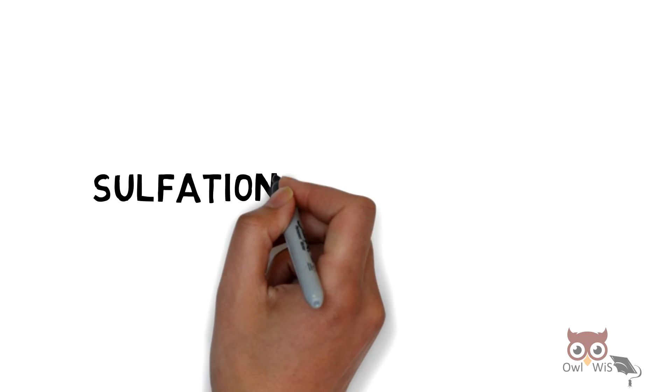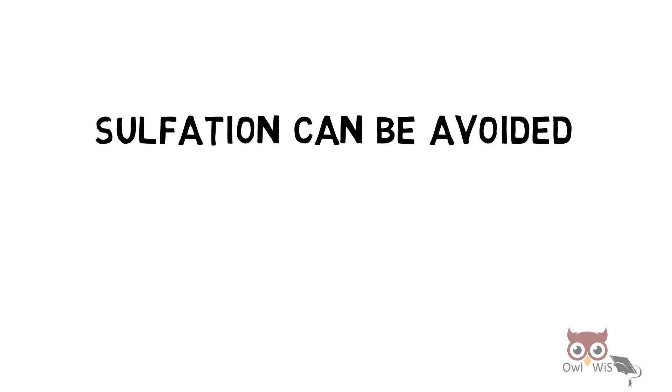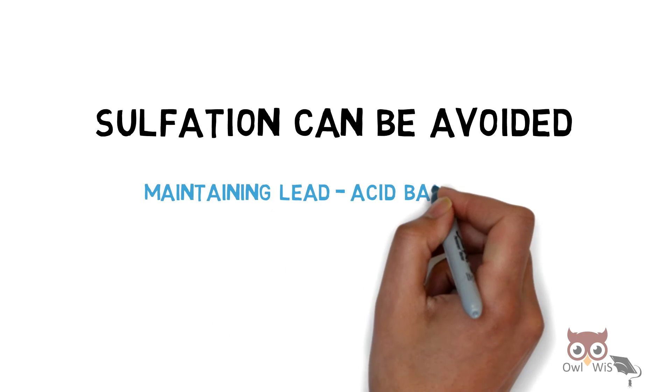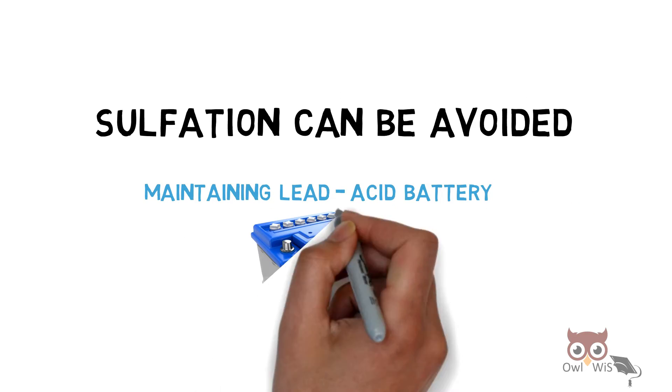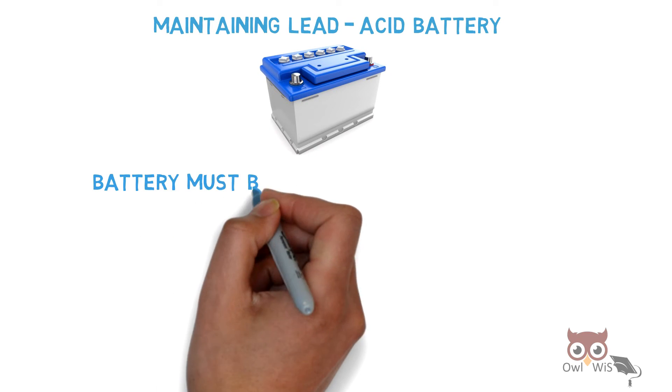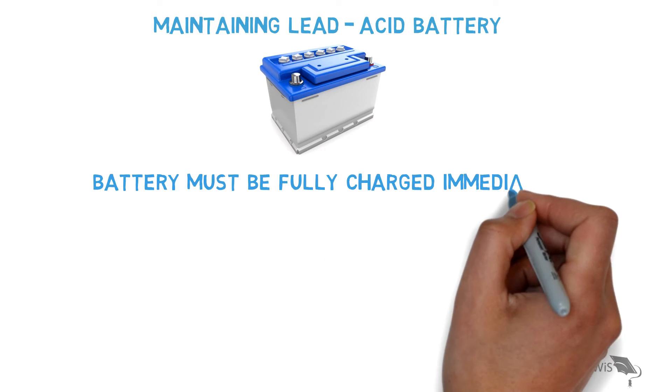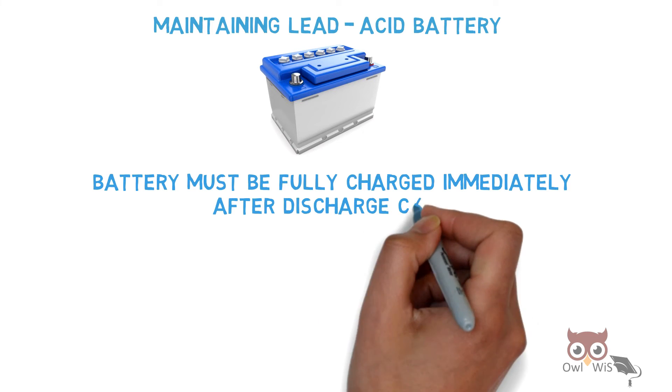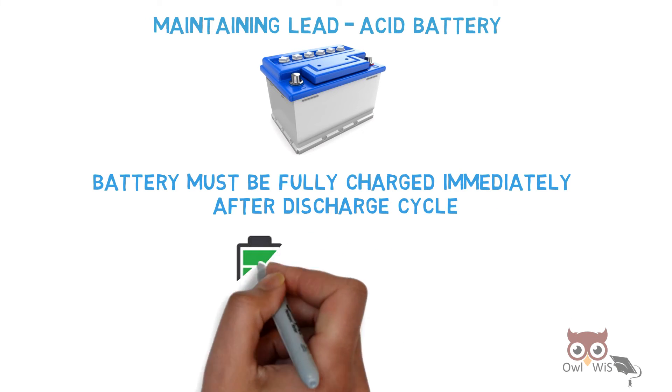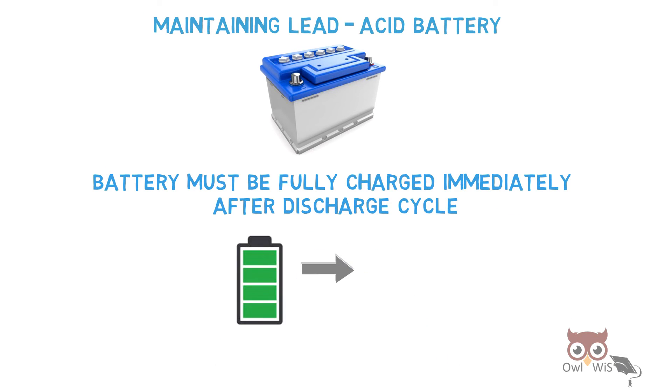Sulfation can be avoided by maintaining lead acid battery properly. This can be done if battery is fully charged immediately after discharge cycle. It should not be left uncharged. Once it is discharged, it needs to be fully charged again.